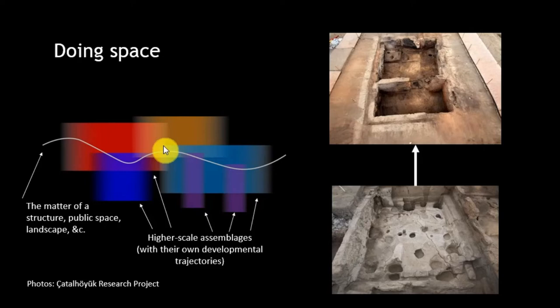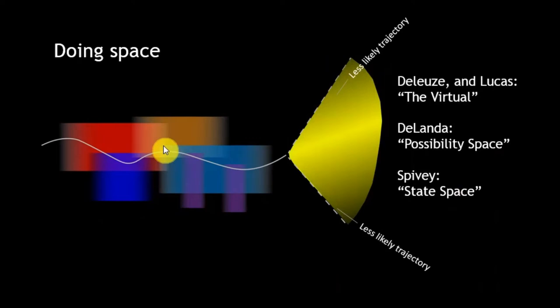As these relations push or pull on the matter of a structure, that matter acquires a developmental trajectory — what I'm trying to map out with this wavy line — and that trajectory has some momentum to it. It's got a direction towards some future, sedimented into the material of what it is and the array of ongoing relations around the space. This future aspect of space and of relation is what Deleuze, and what Gavin Lucas in his keynote on Monday, talk about as the virtual. DeLanda calls it possibility space; the neurologist Michael Spivey calls it state space. All these are ways of talking about the fact that what's coming has a topology to it, has a shape.